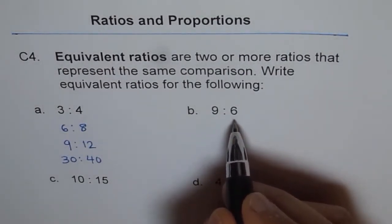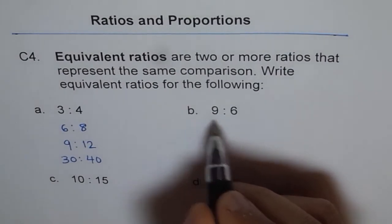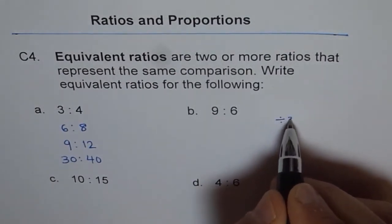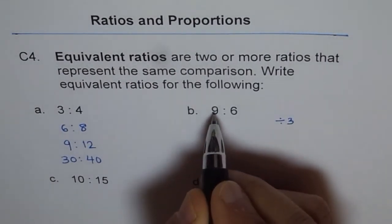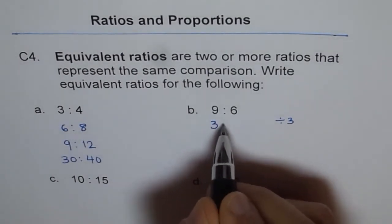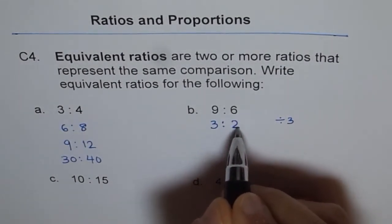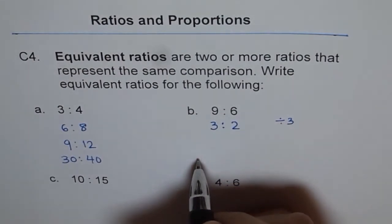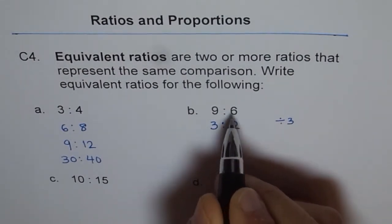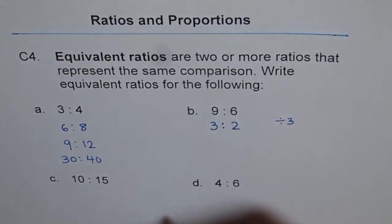both can be divided by 3. So if I divide them by 3, then what do we get? 9 divided by 3 is 3. And 6 divided by 3 is 2. So 9 is to 6 is equivalent to 3 is to 2. These are equivalent ratios.